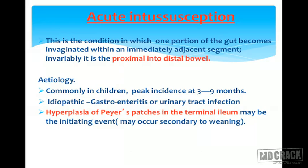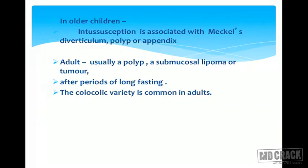Etiology is commonly seen in children with peak incidence at 3–9 months. Etiology can be idiopathic, or gastroenteritis and urinary tract infection can be followed by intussusception. The main causative factor is hyperplasia of Peyer's patches in the terminal ileum, which can be the initiating event and may occur secondary to weaning. In older children, it is associated with Meckel's diverticulum, polyp, or appendix.